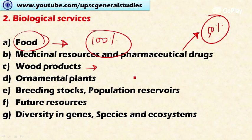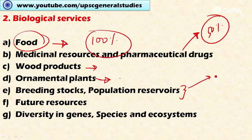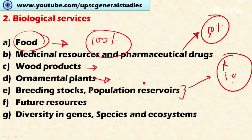Biodiversity also provides ornamental plants — for example, the orchids growing in gardens originally come from forests. Next is breeding stock and population reservoirs. Improved varieties of rice, wheat, barley, tomato, carrot, potato, and various other cultivated crops have their wild counterparts in the forest, and these wild counterparts have useful genetic resources for future breeding programs.